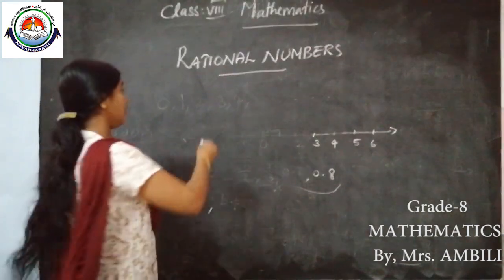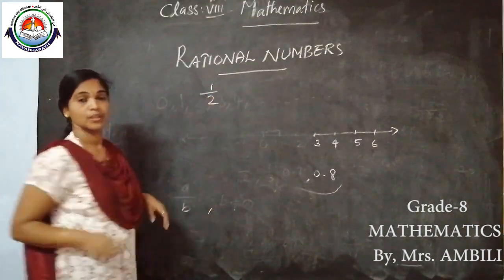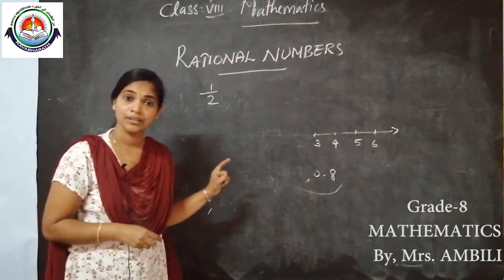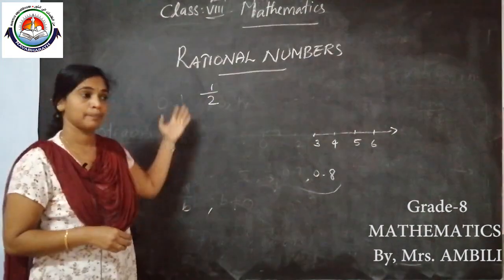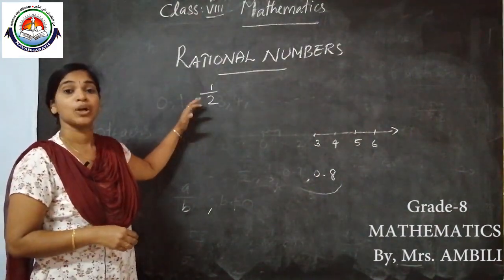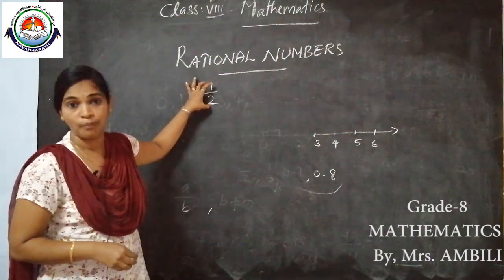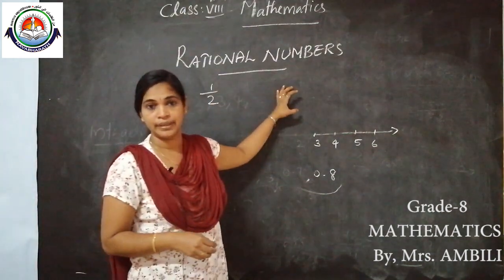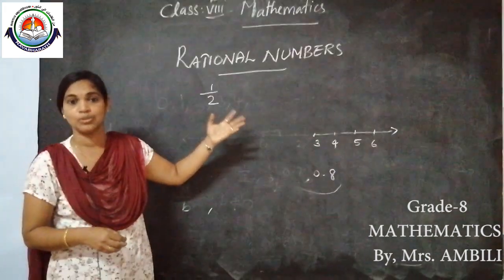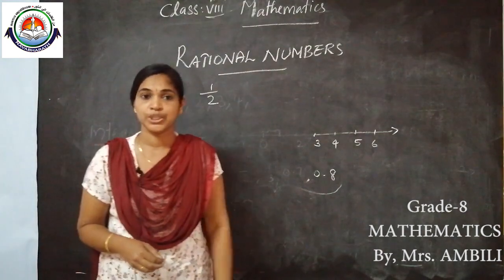So 1/2 — is it a rational number? Yes, 1/2 is a rational number because 1/2 is in the form of A by B and 2 is not equal to 0. So 1/2 is a rational number.